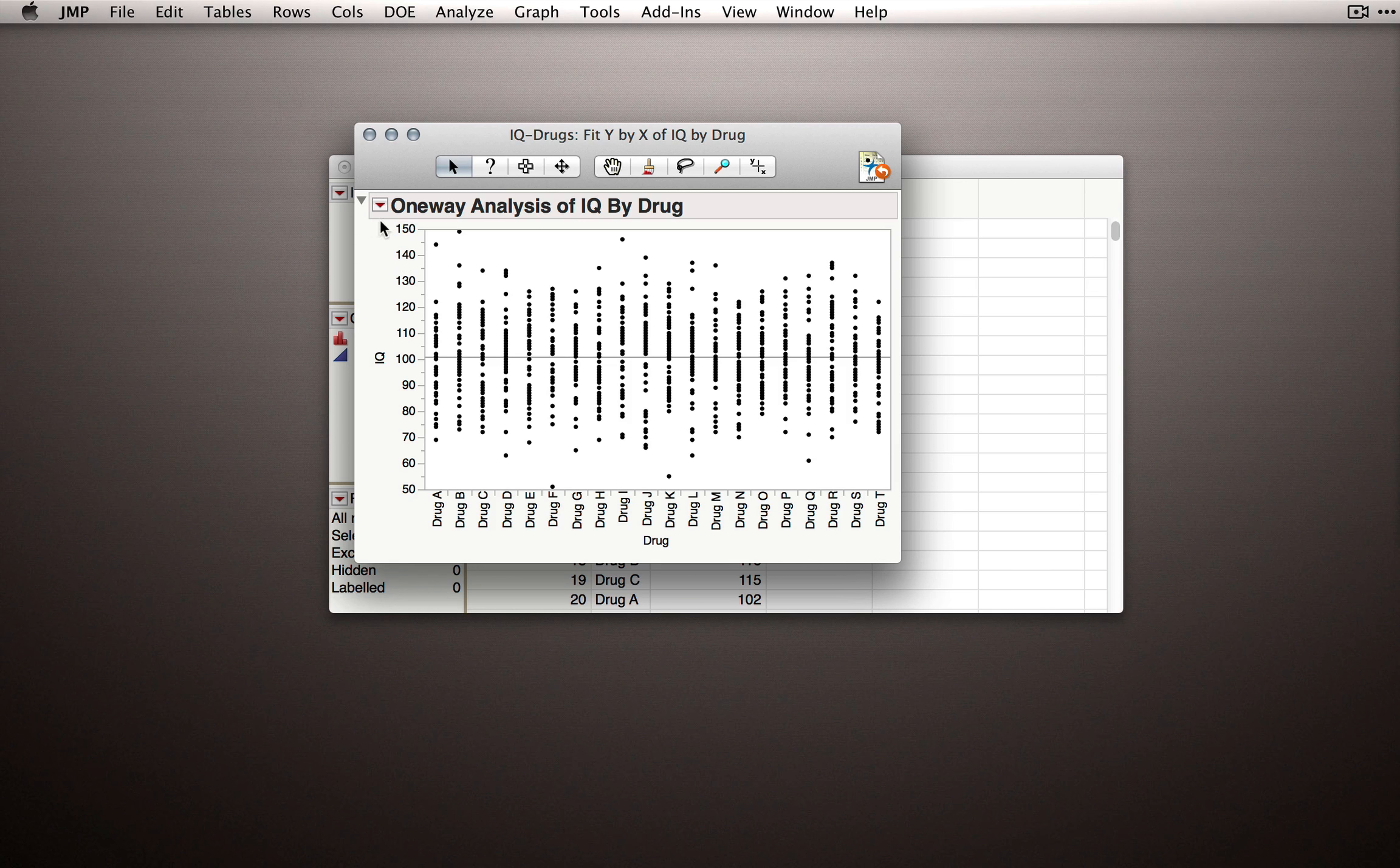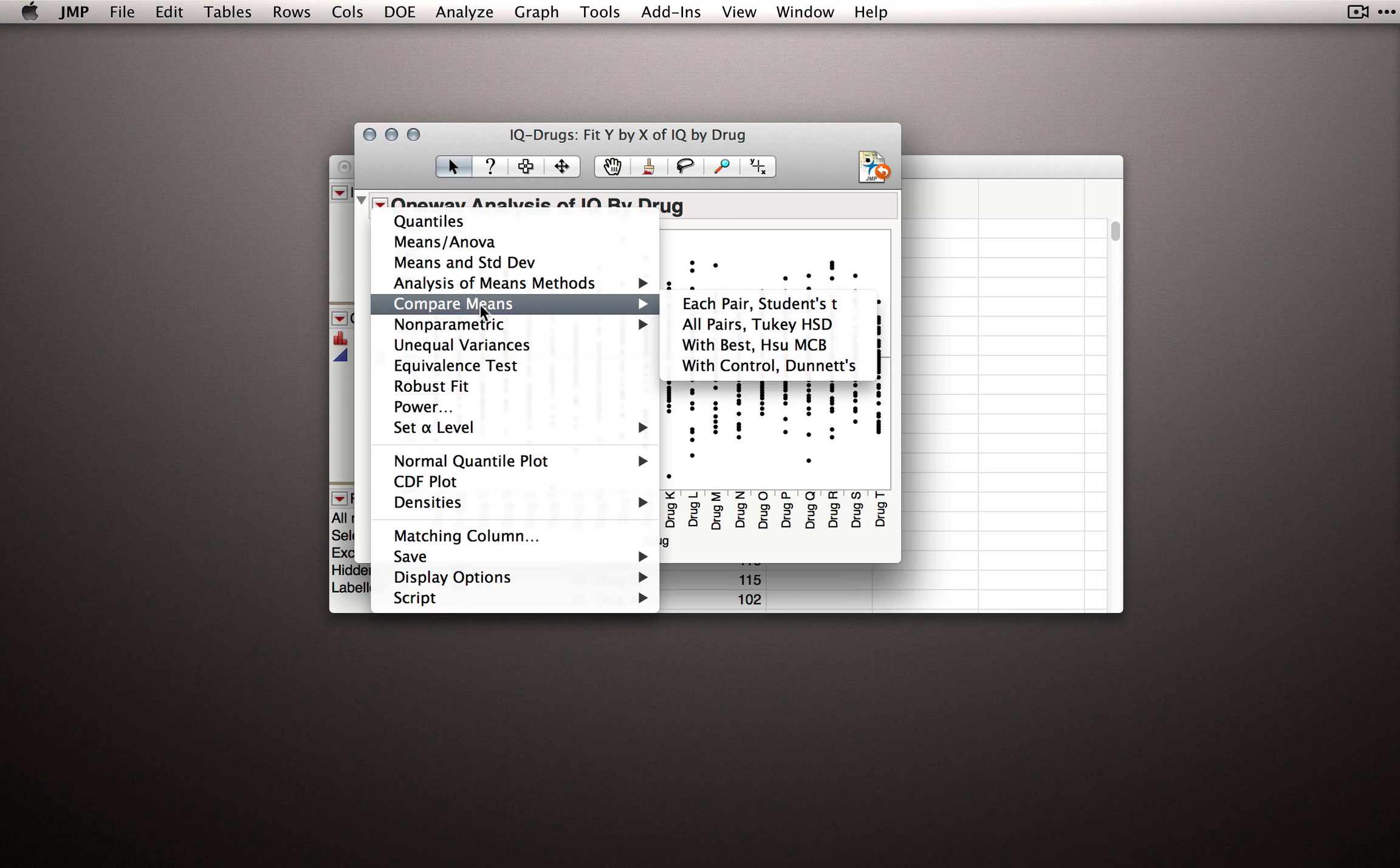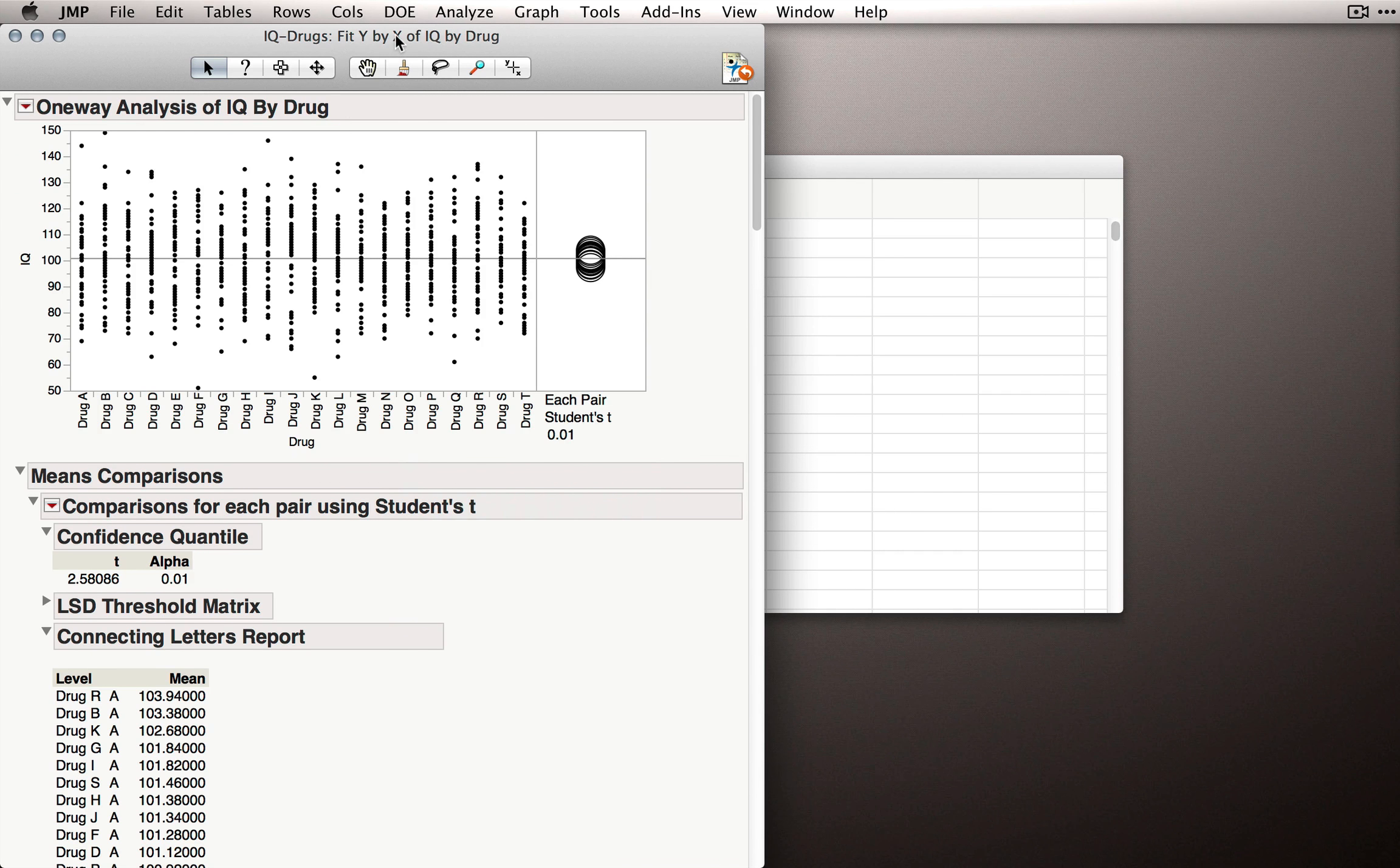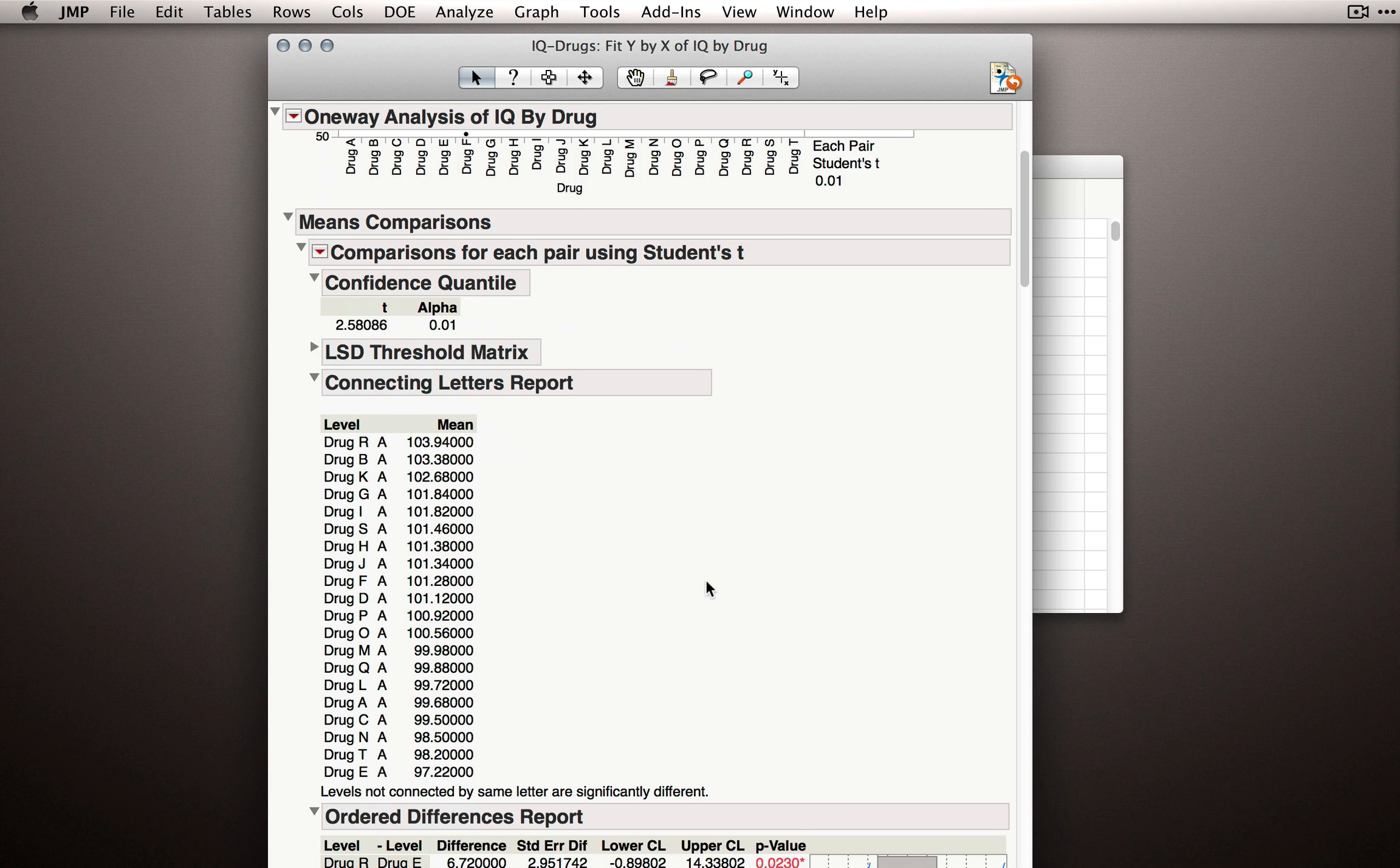To produce output, we'll go to the red triangle and select an option. In this case, we can skip the means in ANOVA because what we're doing is each pair's student's T, the specific pairwise test that we're interested in. When I click this, Jump will return all of the output, and I'll again minimize that LSD threshold matrix, but I want you to look at the comparisons of the Connecting Letters reports. Notice before we had some statistically significant difference, but now none of our drugs are appearing to be different. We've controlled for our overall alpha.